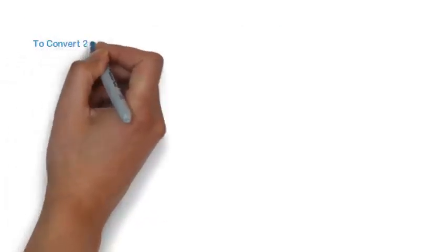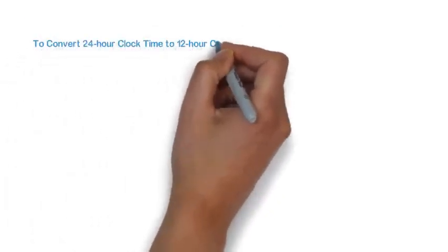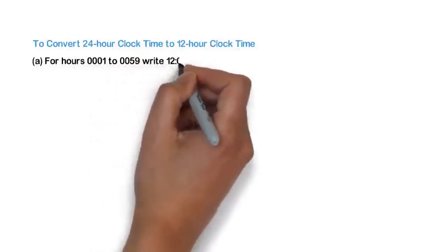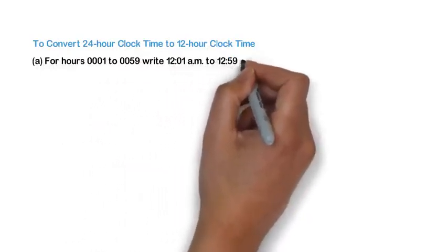To convert 24-hour clock time to 12-hour clock time, for hours 0001 to 0059, write 12:01 a.m. to 12:59 a.m.